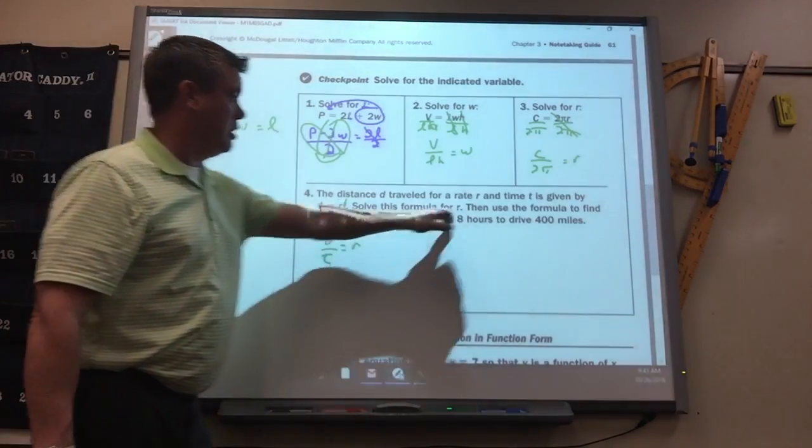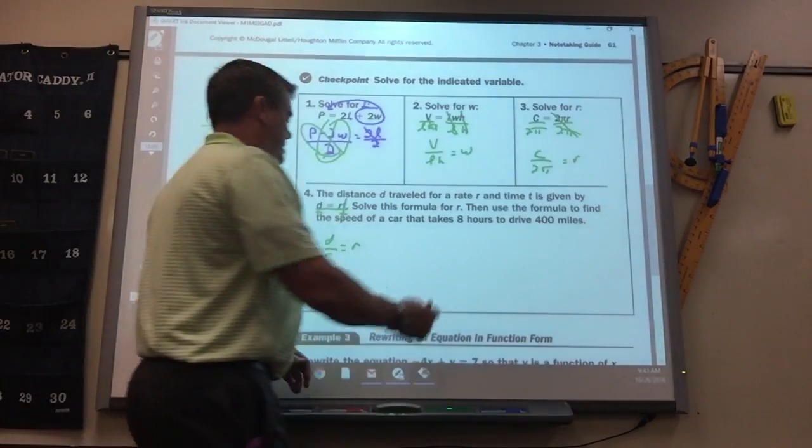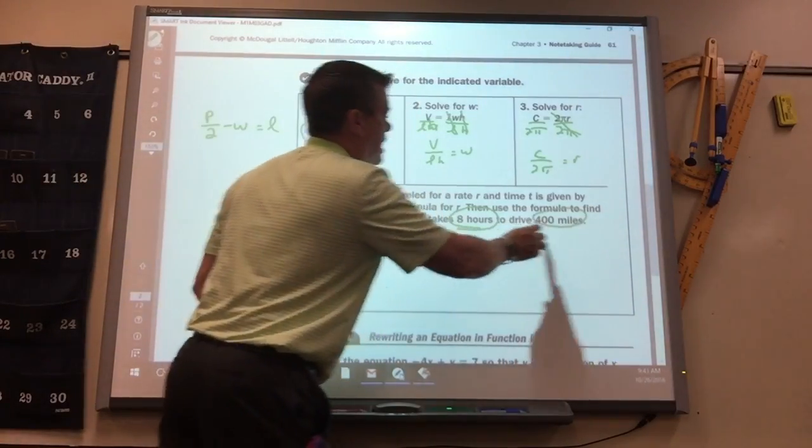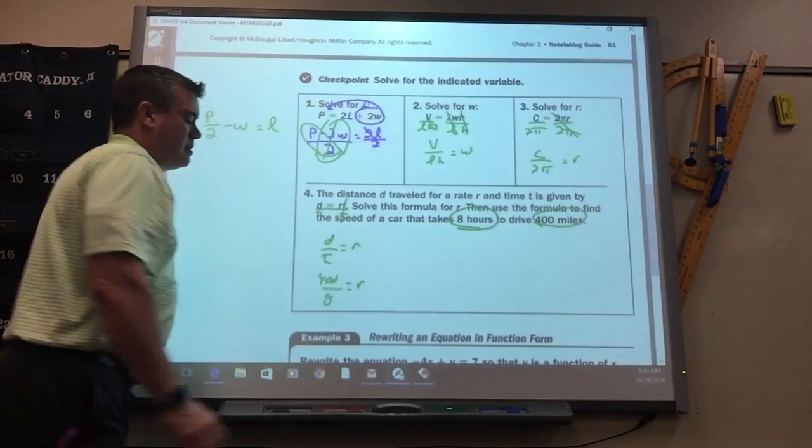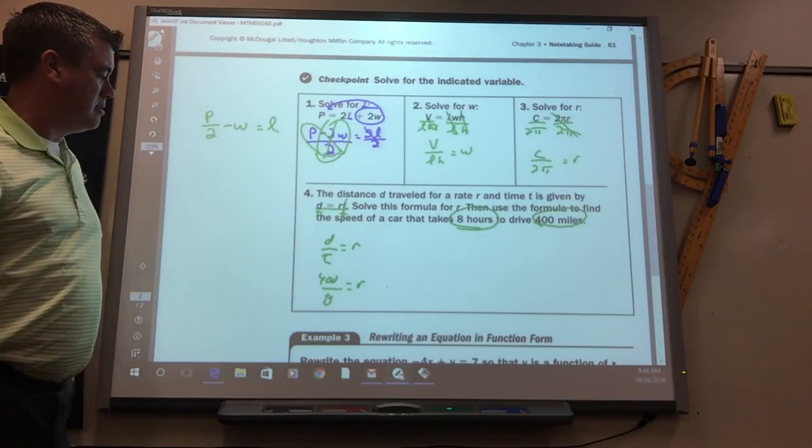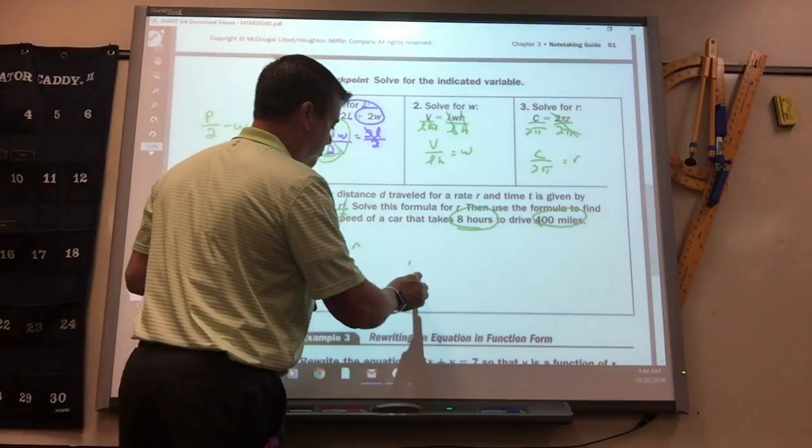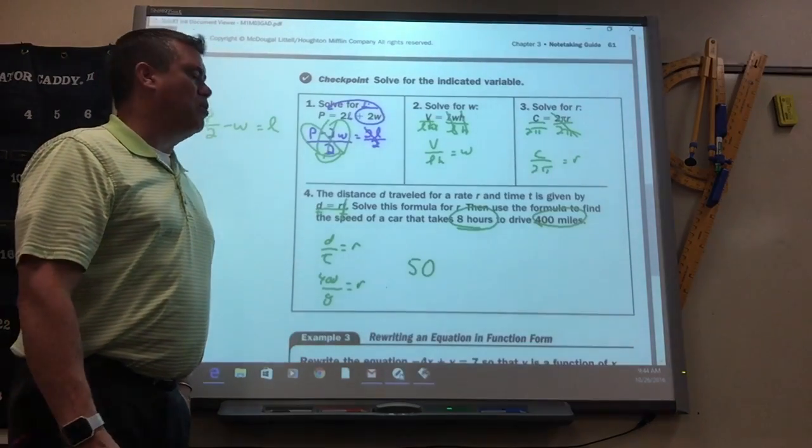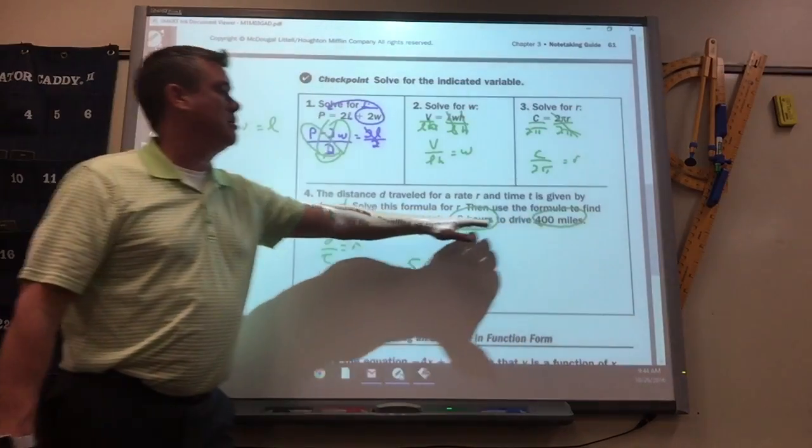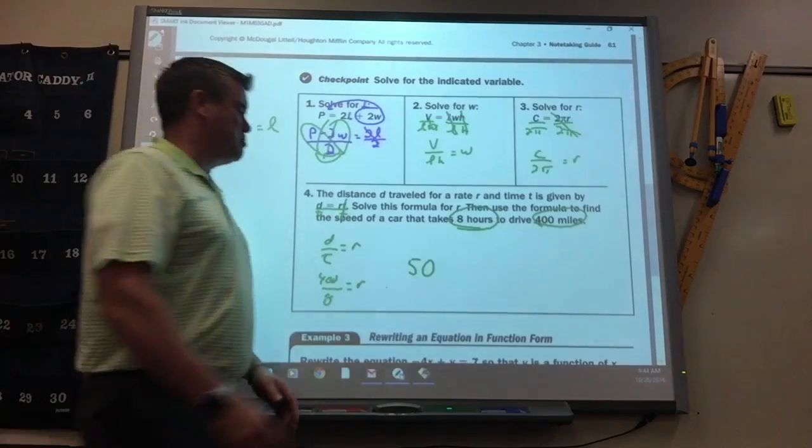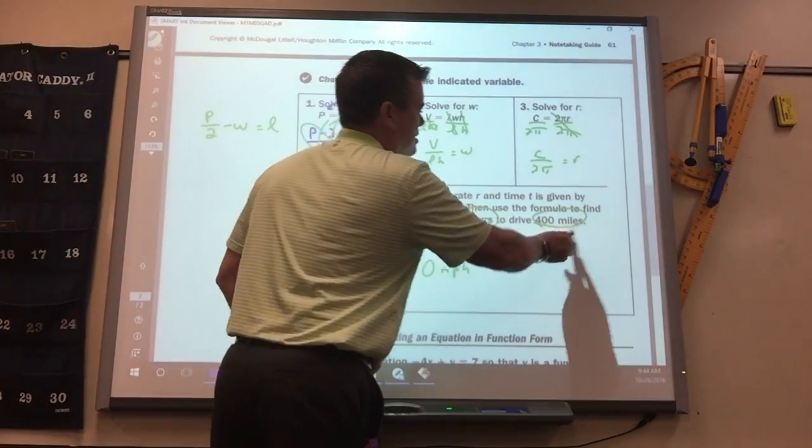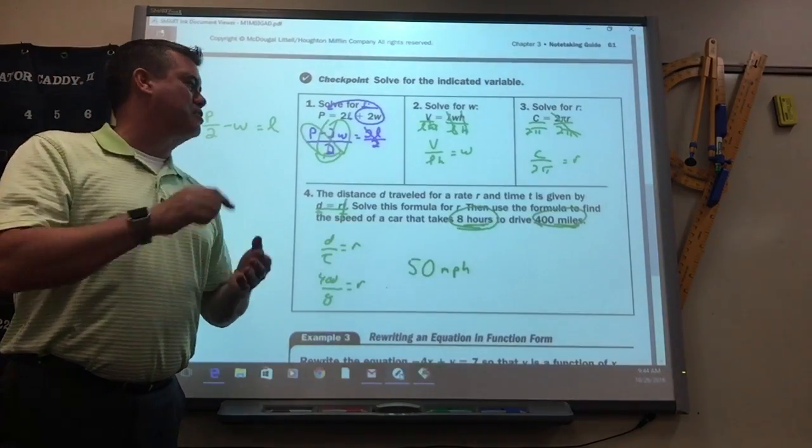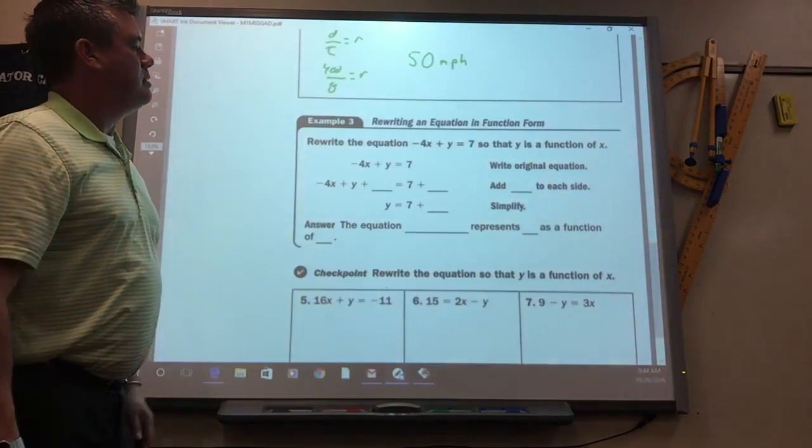Now, solve this formula for, or use the formula to find the speed of a car that takes 8 hours. So where does the 8 go in this formula? Time. Time. To drive 400 miles. Distance. So that's rate. So 400 divided by 8 is 50. Rate is 50. And then now, what would you label this since it's a rate? It is rate, but what's rate? Look at what the problem says. Miles per hour. Because it's 400 miles in 8 hours. Remember, rate is always like feet per second, miles per minute, yards per second, whatever.